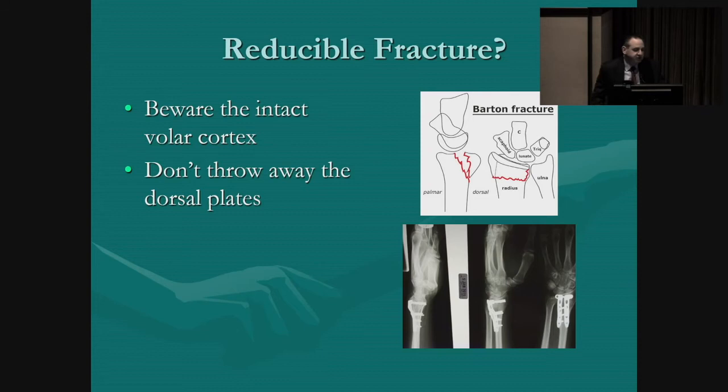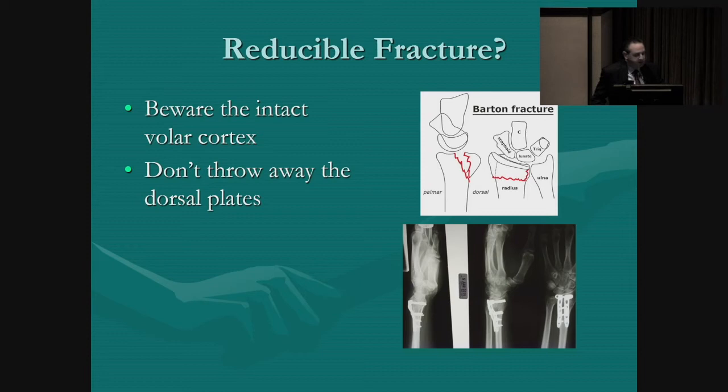The next question is: is the fracture reducible? You need to be aware of the intact volar cortex. If you have a distal radius fracture of the Barton's variety and it's a dorsal fracture, it may be hard to plate these from a volar approach. You can put the screws through intact volar cortex and try to capture the dorsal piece, but it's difficult. So don't throw away the dorsal plates — they come in handy for this fracture.